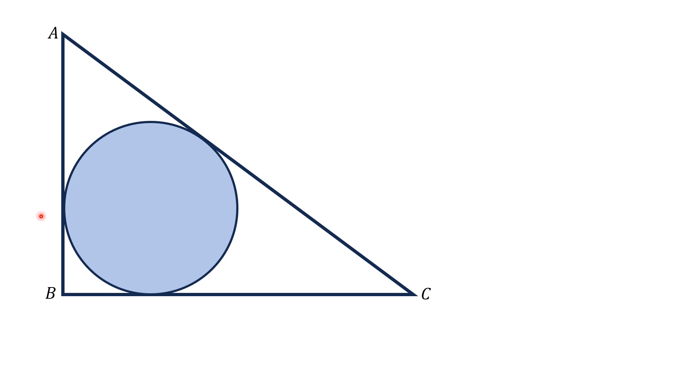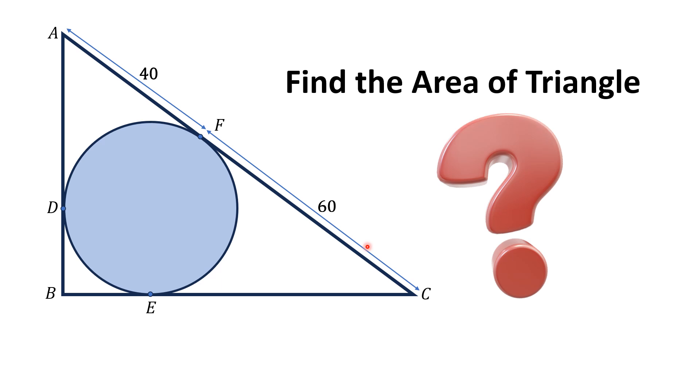Let's say that the points of tangency are D, E, and F. Moreover, it is given that the length AF is equal to 40 units and the length FC is 60 units. By this limited data, we have to find the area of this triangle ABC.